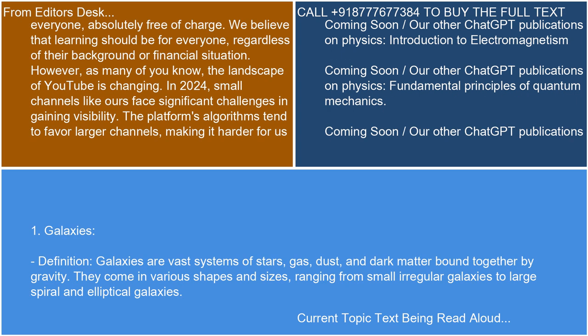1. Galaxies. Definition: Galaxies are vast systems of stars, gas, dust, and dark matter bound together by gravity. They come in various shapes and sizes, ranging from small, irregular galaxies to large spiral and elliptical galaxies.